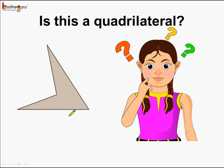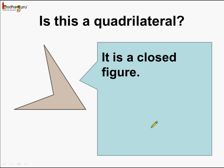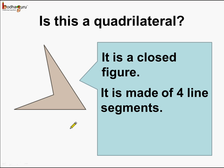Here we see a figure which has four sides: one, two, three, four. Now is this a quadrilateral? Let us see. First, yes, it is a closed figure. Also we see it is made of four line segments: one, two, three, four.